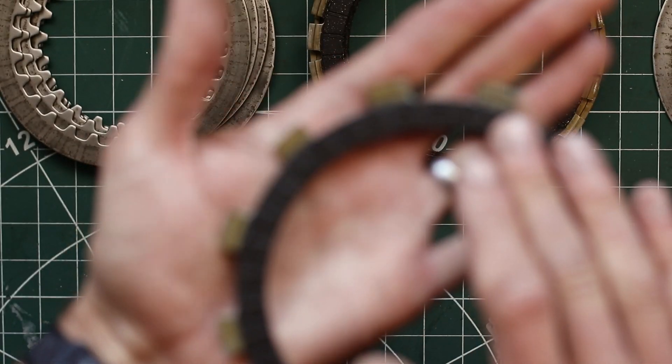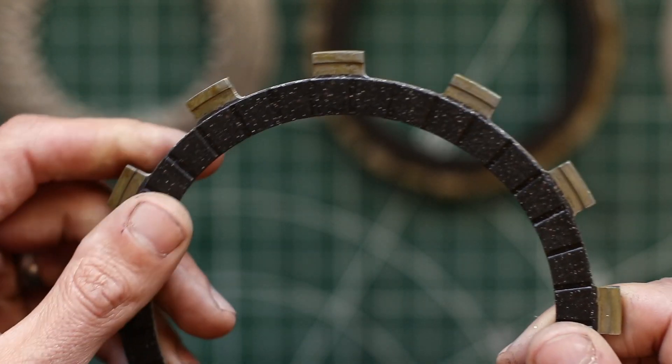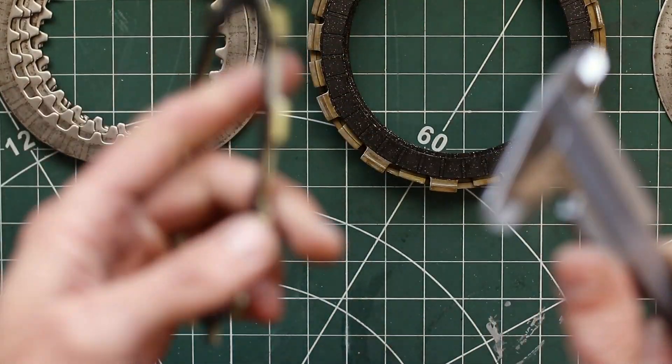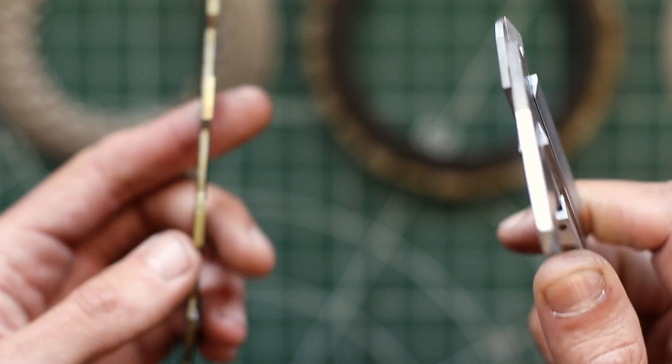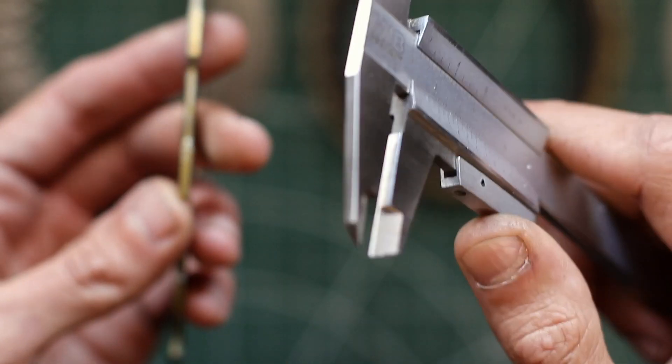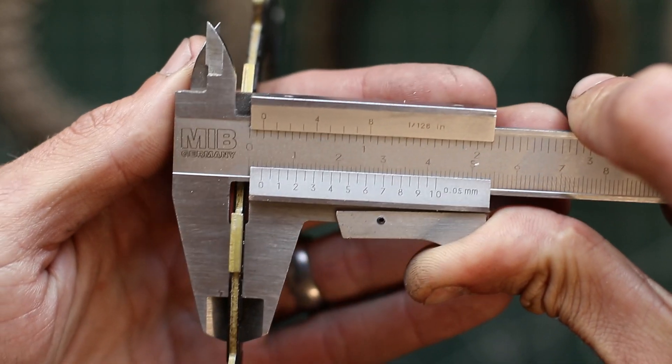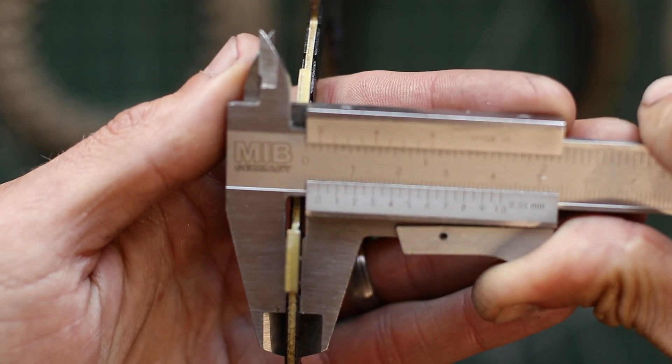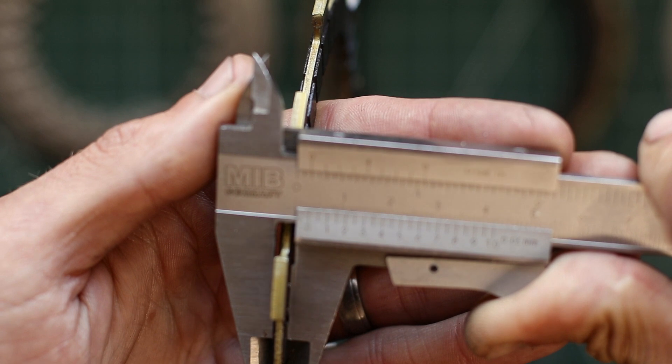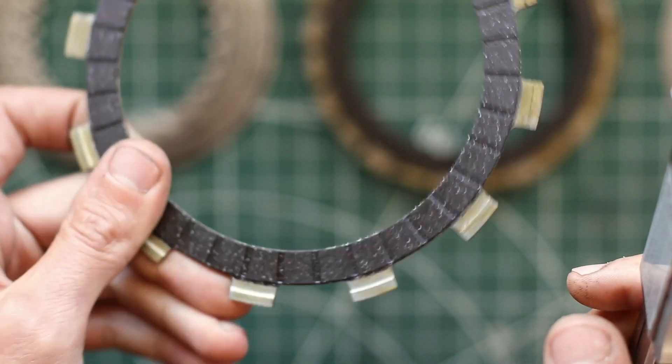Right, so I'm going to start with the friction plates because these are the wearing items in our clutch assembly, and not the clutch plates. So I'm going to take a vernier caliper, and we already established before that the thickness needs to be anything between 2.9 and 3.1 millimeters. So let's go ahead and measure this.